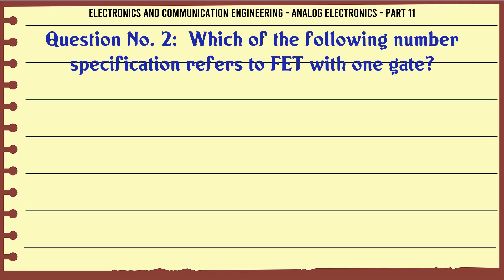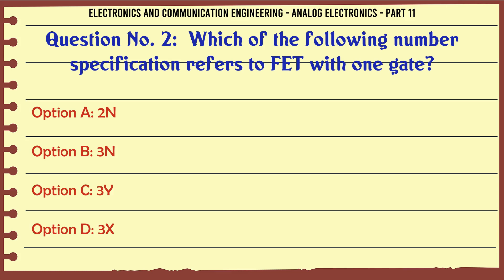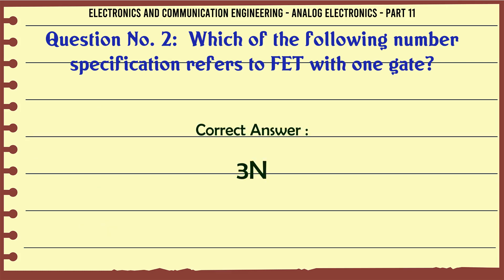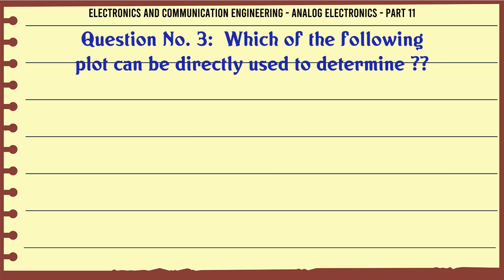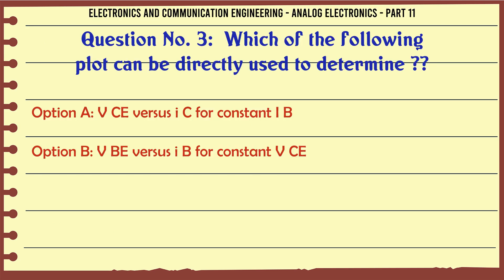Which of the following number specifications refers to FET with one gate? A. 2N. B. 3N. C. 3Y. D. 3X. The correct answer is: 3N.